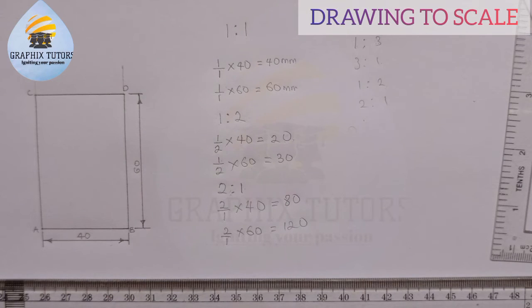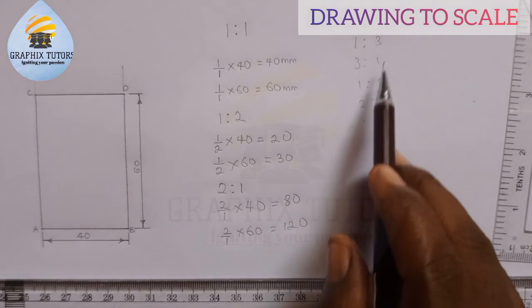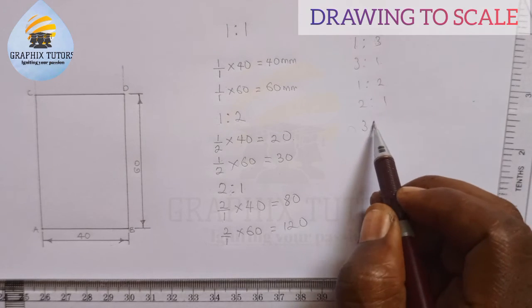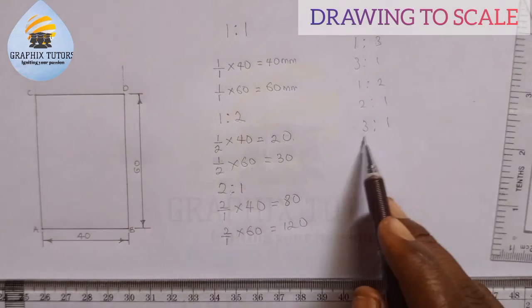This is one over two of the distance that is given. So it can be half the full size or twice the size, or triple the size. When you have three is to one, it means triple the size.